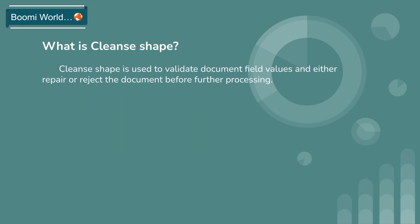So first, let's look at what is Cleanse Shape. Cleanse Shape is used to validate document field values and either repair or reject the document before further processing. So how do we validate document field values? I'll explain with a real-time sample scenario.